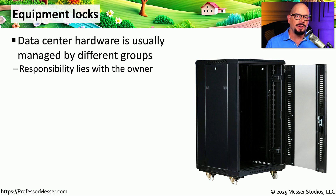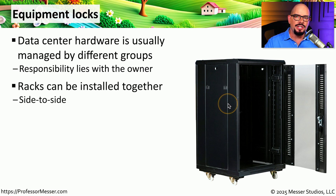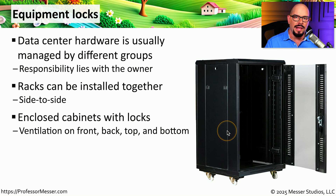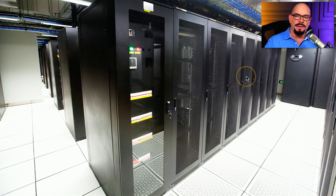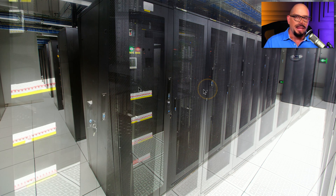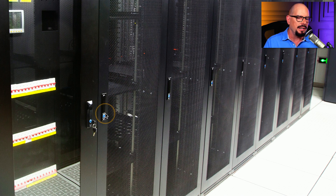Even in very secure data centers, it's a good idea to use locks on cabinets to allow access only to authorized personnel. In large organizations, multiple groups may access systems within a data center, so those areas must be locked down appropriately. Racks are placed side by side so nothing can be accessed from the side panels. Doors on the front and back are fitted with locks to prevent access to the equipment inside. Cooling is maintained through holes at the bottom and top for airflow. Once installed, some doors are glass and others are perforated to allow airflow while maintaining security — and you need a key to unlock them.